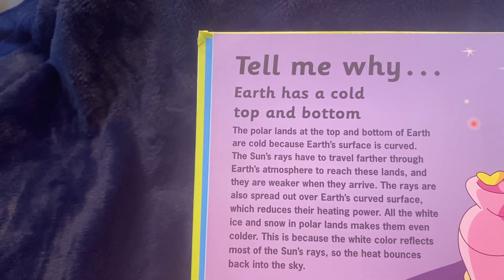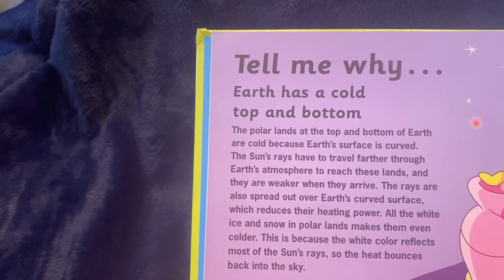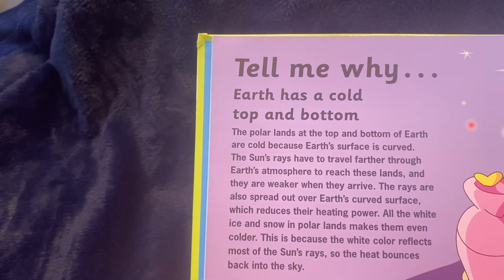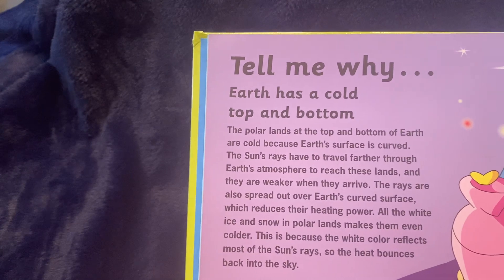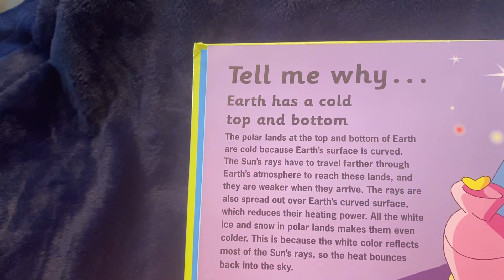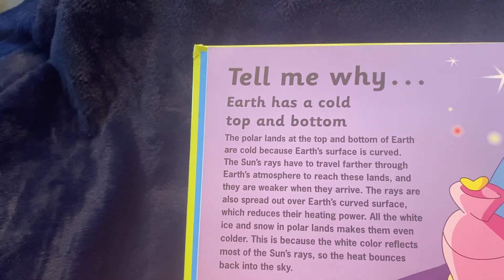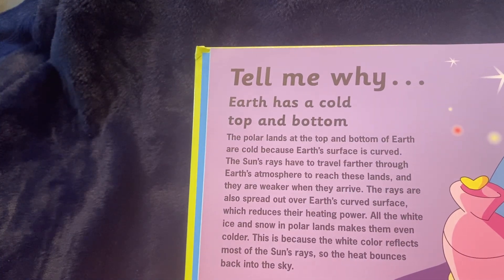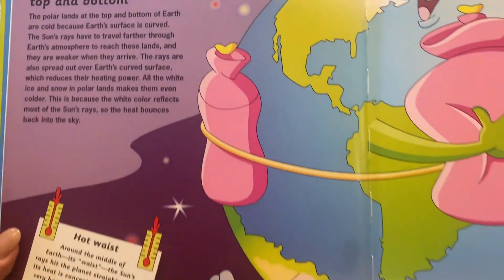The polar lands at the top and bottom of Earth are cold because Earth's surface is curved. The sun's rays have to travel farther through Earth's atmosphere to reach these lands, and they are weaker when they arrive. The rays are also spread out over Earth's curved surface, which reduces their heating power. All the white ice and snow in polar lands makes them even colder. This is because the white color reflects most of the sun's rays, so the heat bounces back into the sky.